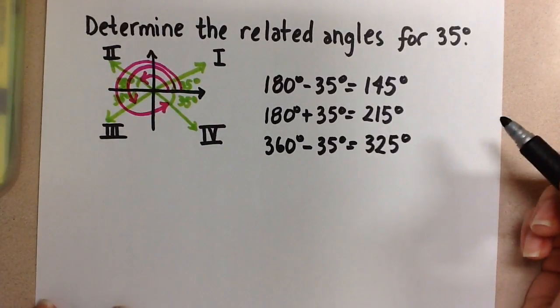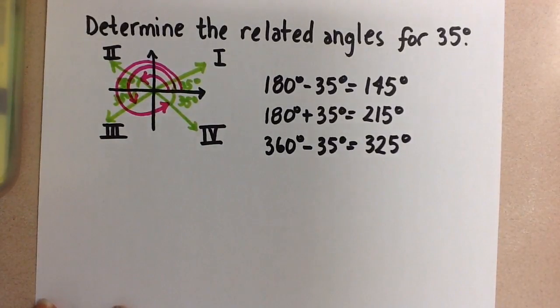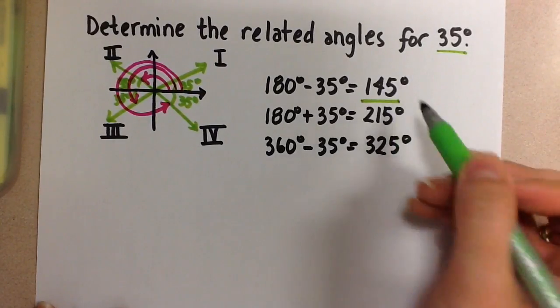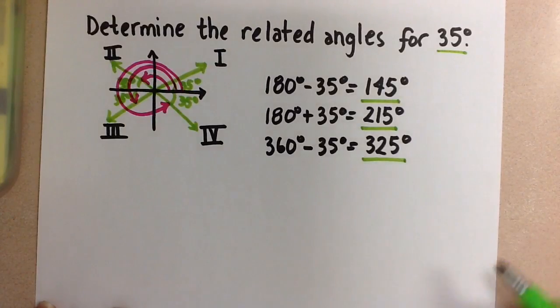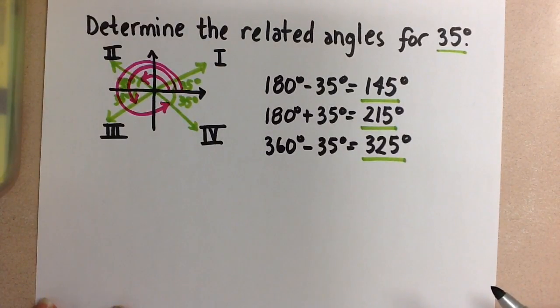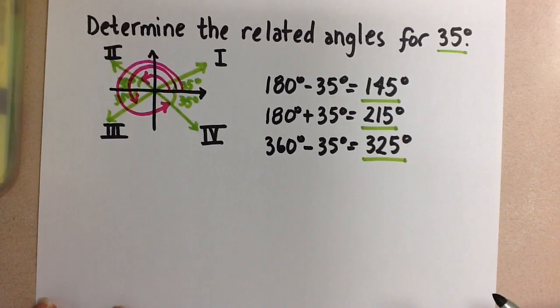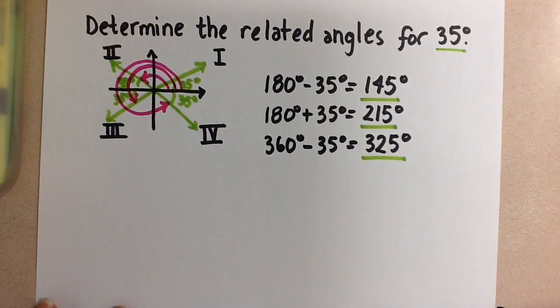So the related angles for 35 degrees are 145 degrees, 215 degrees, and 325 degrees. So all four of those are related with a related acute angle of 35 degrees. Thanks for visiting Mrs. A Loves Math.